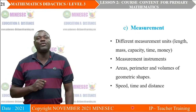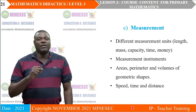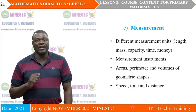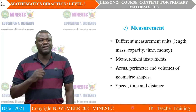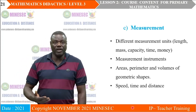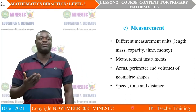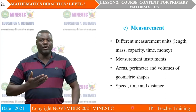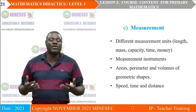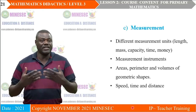The third component is measurement. Children will study the different measurement units — length, mass, capacity, time, and money — and the different measurement instruments used to calculate these measurements. The children will also learn how to calculate areas, perimeter, volumes of geometric shapes, and how to calculate speed, time, and distance.